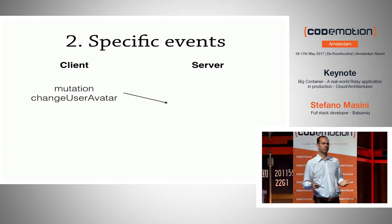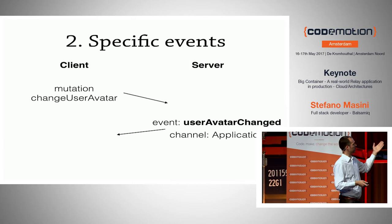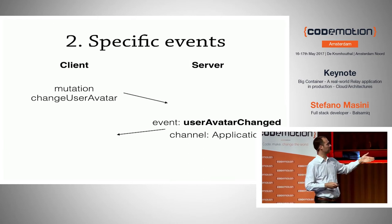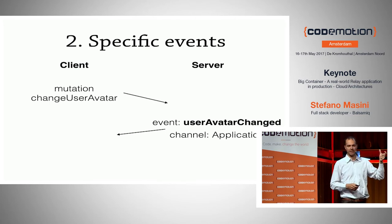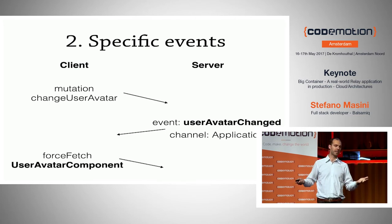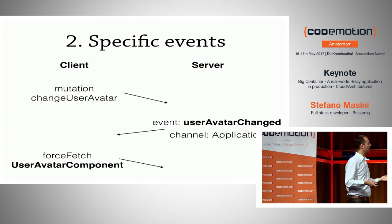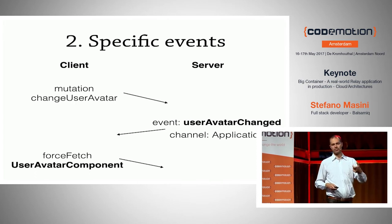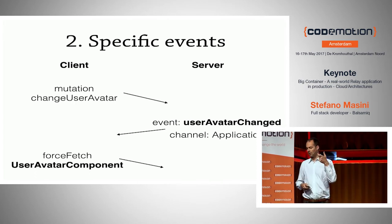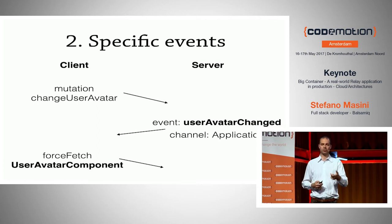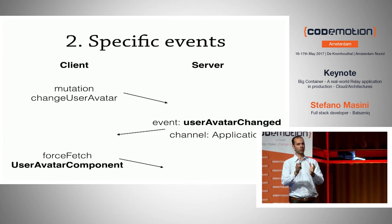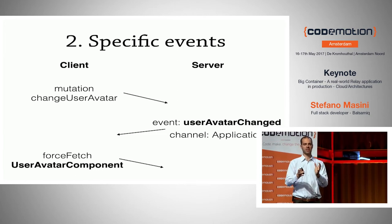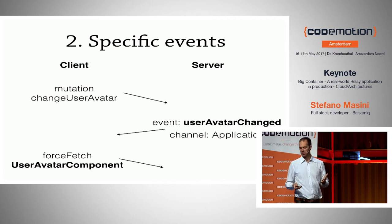How can I improve on this? I can have specific events. When the server gets a 'changeUserAvatar' mutation, instead of firing a generic event it can fire a specific event called 'userAvatarChanged.' My UI components can then filter on the event name, so the user avatar component will only force-fetch when it receives a 'userAvatarChanged' event. That improves things, but I still have a lot of components listening to many events that they just discard.